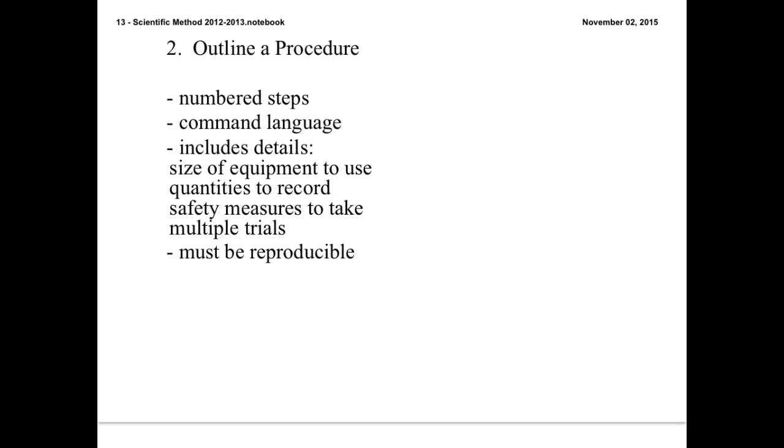Step 1, weigh out this amount. Step 2, measure the volume of this item. It also needs to be very detailed. So in other words, what equipment are you using? What size of equipment are you using? What should you record? Are there any safety measures you need to take or need to examine? And also, you need to account for multiple trials. Good experiments, good experimental design involves more than one trial. Also, it must be reproducible. So in other words, whoever you give this procedure to, they should be able to perform the exact same experiment as anybody else.